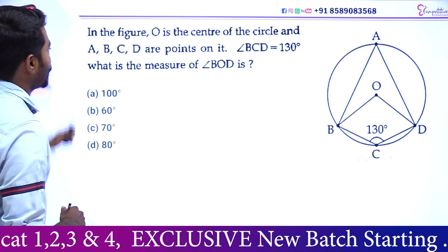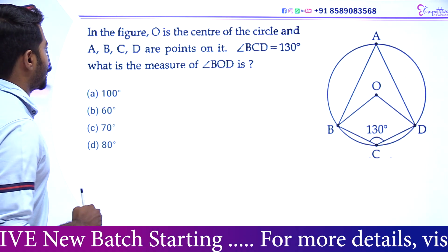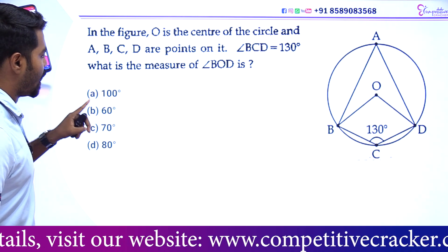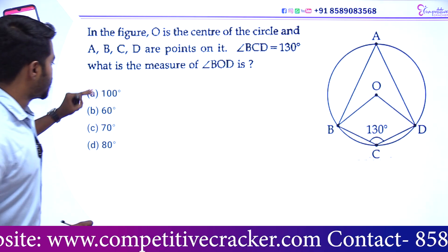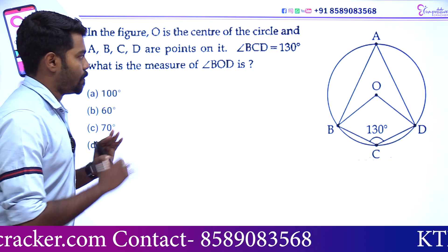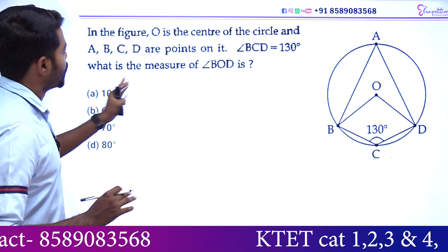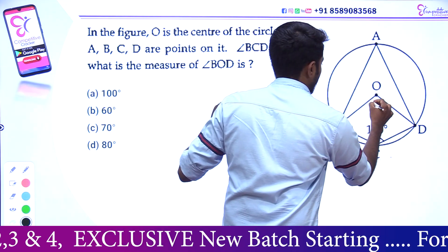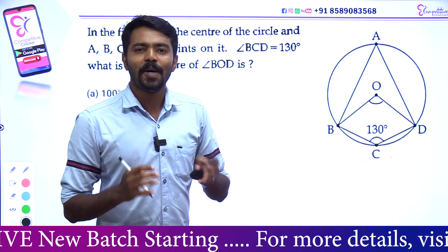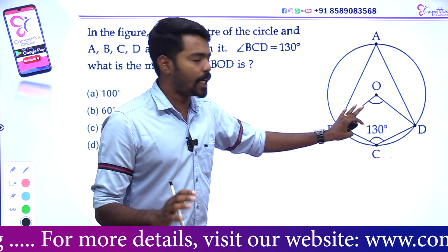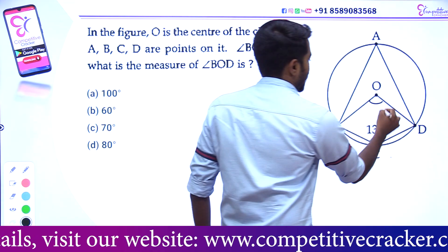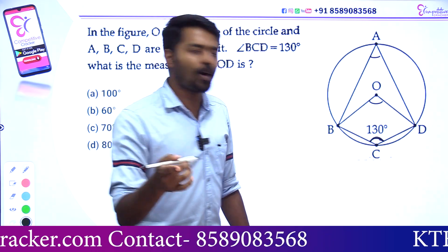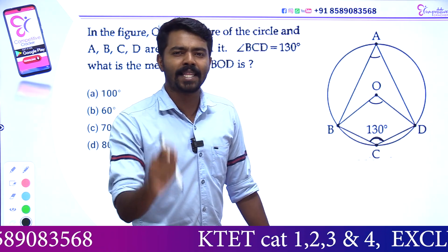Let's take a look at this figure. O is the center of the circle and ABCD are points. If angle BCD is equal to 130 degrees, what is the measure of angle BOD? Options: 160, 70, 80. In this previous year question, we have to find the value of angle BOD. What is this angle?